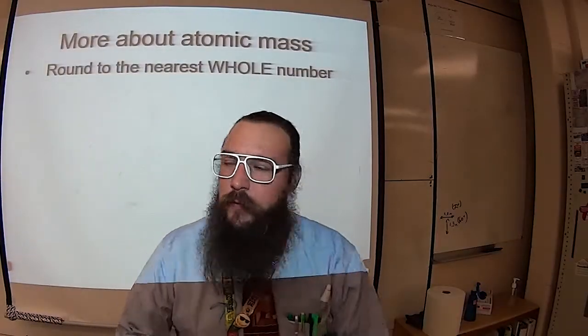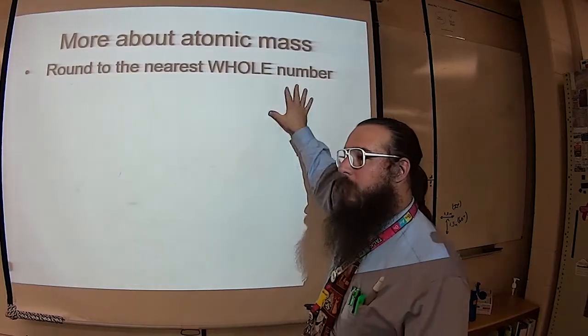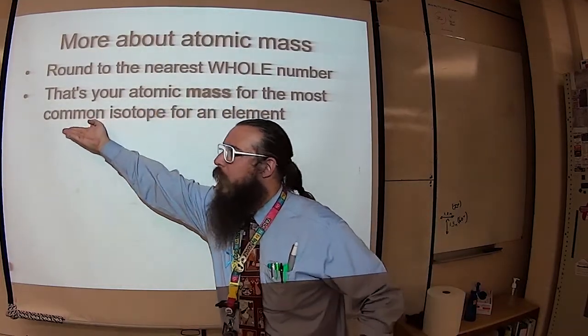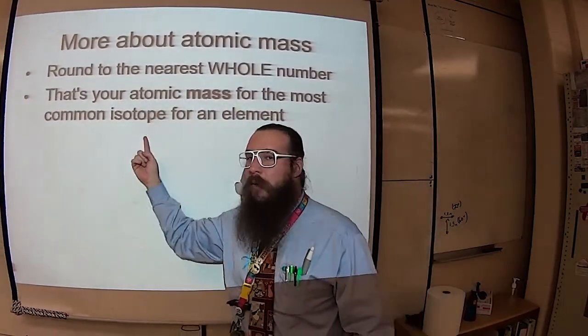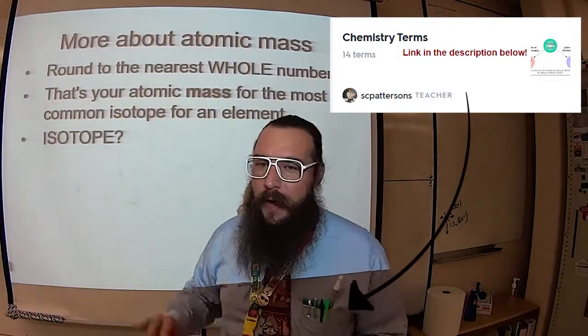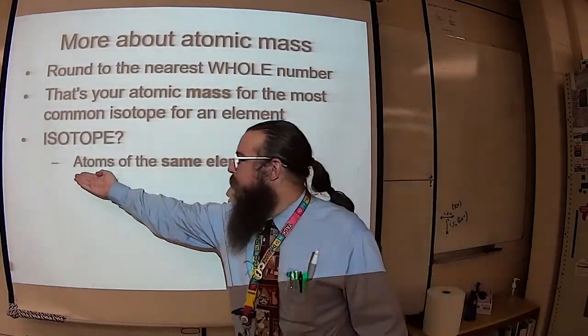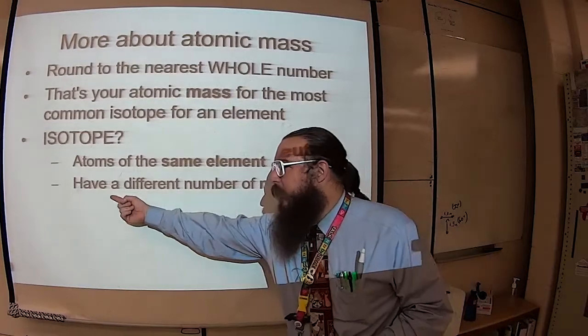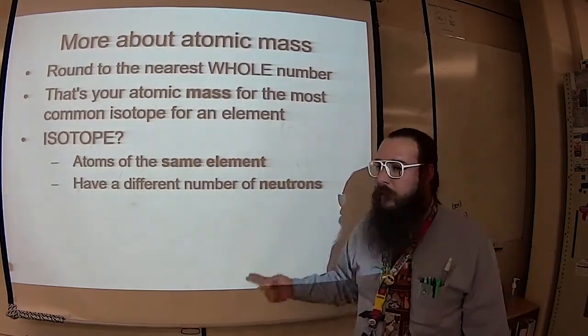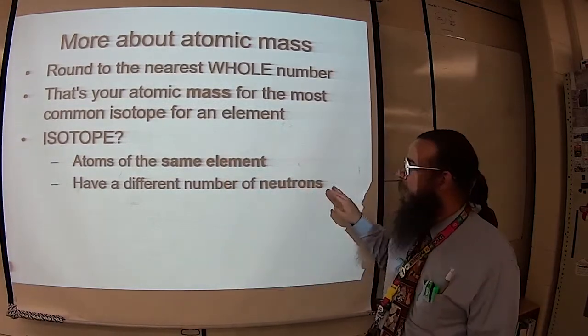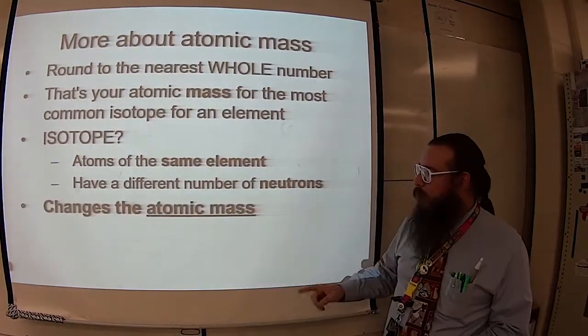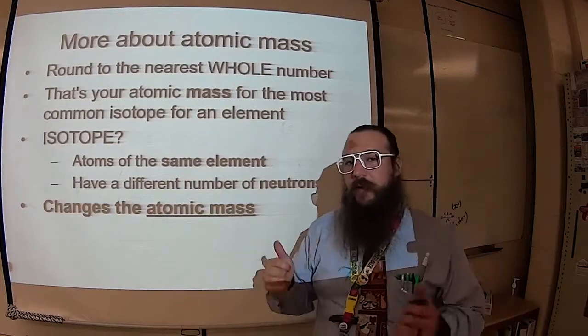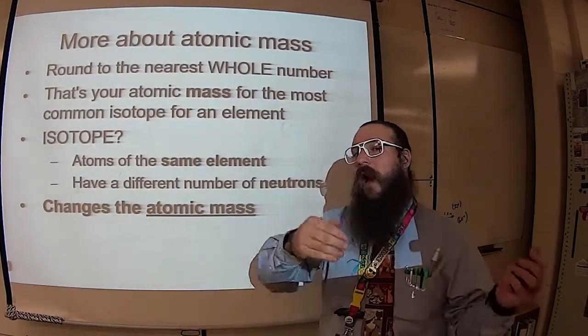First, as we've discussed before, when we're doing the atomic mass, we round to the nearest whole number. Now the reason why you round to the nearest whole number is because that's the atomic mass for what we call the most common isotope for an element. You may remember isotope from the Quizlet. If not, here's a reminder what isotope is. Isotope is any atom of the same element, so we're talking the same number of protons, but has a different number of neutrons. So it's still the same element because that's based on protons. However, it's got a different number of neutrons, so the atomic mass is going to be changed. Any two atoms of the same element with different atomic masses, we call those isotopes.